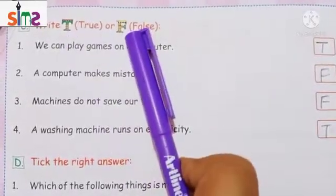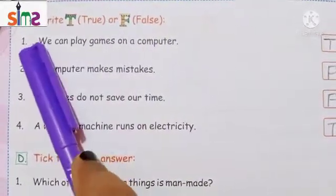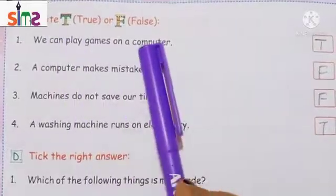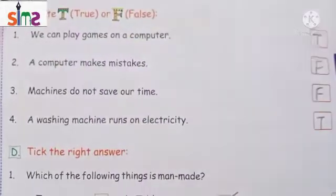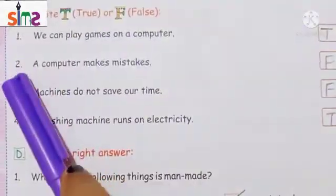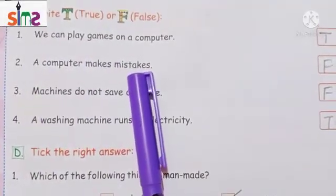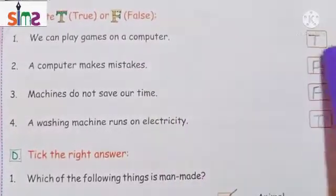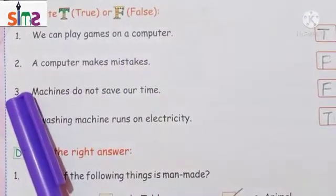Let's start doing true or false. The first statement is: we can play games on a computer. Can we play games on a computer? This sentence is correct, so we will write T — T means true. The second true or false is: a computer makes mistakes. Does a computer always make mistakes? This sentence is wrong, so we will write F — F means false.